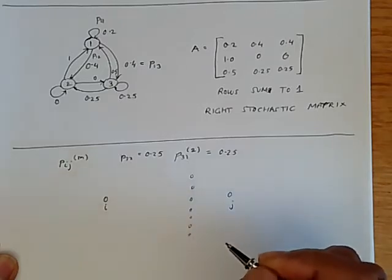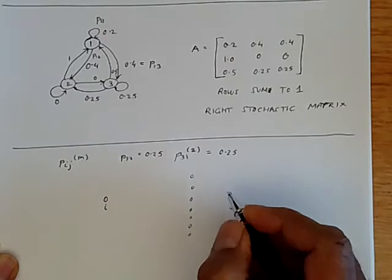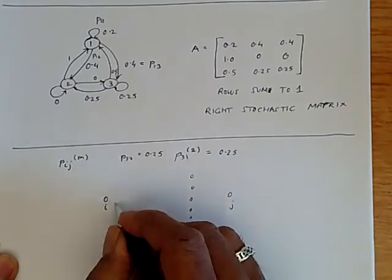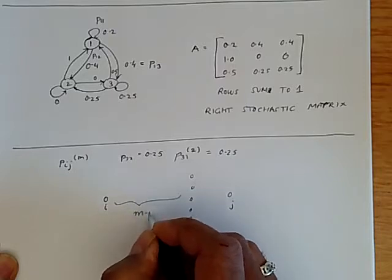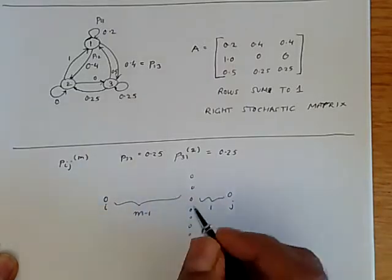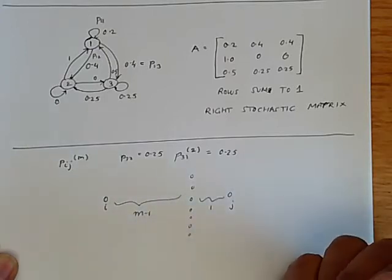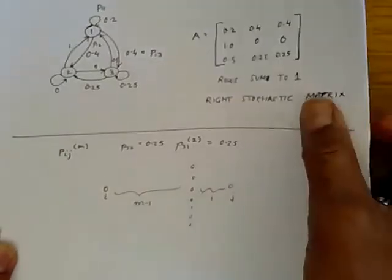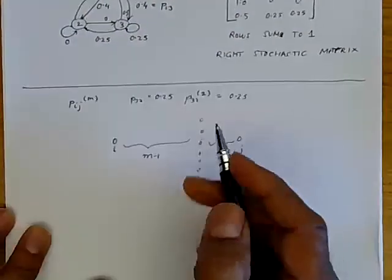If we're going to go from i to j in m steps, that means we have to go from i to some intermediate state in m minus one steps, and then from there to j in one step. The probability of these two are independent, so we can write down the transition probabilities as the following.